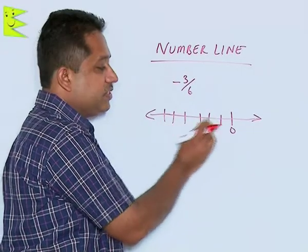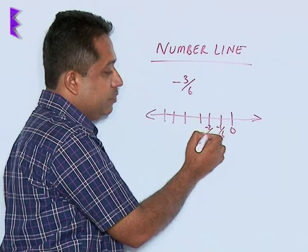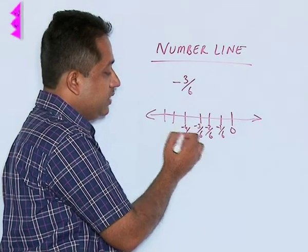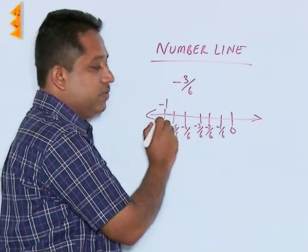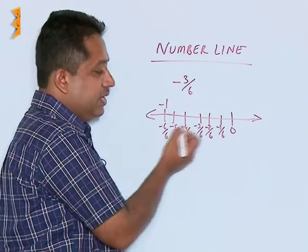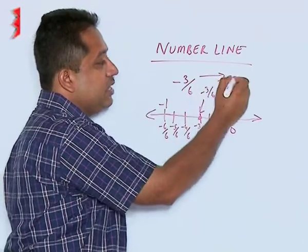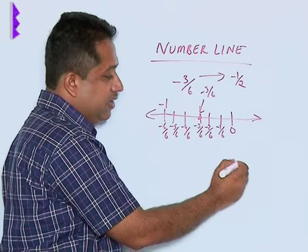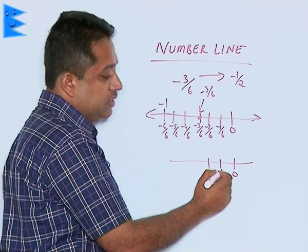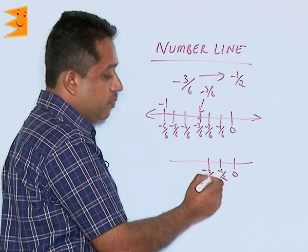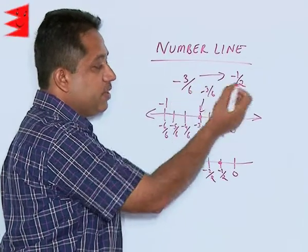These are equal portions measured with a scale. The divisions are labeled as minus 1 by 6, minus 2 by 6, minus 3 by 6, minus 4 by 6, minus 5 by 6, and minus 6 upon 6 which is minus 1. The third division represents minus 3 by 6. We could also simplify minus 3 by 6 to minus 1 by 2 — dividing into 2 parts, the first gives minus 1 by 2 and the second gives minus 2 by 2, that is minus 1. Both approaches give the same equivalent value.